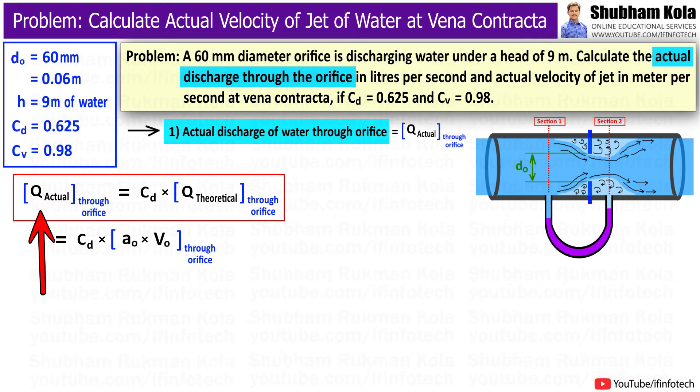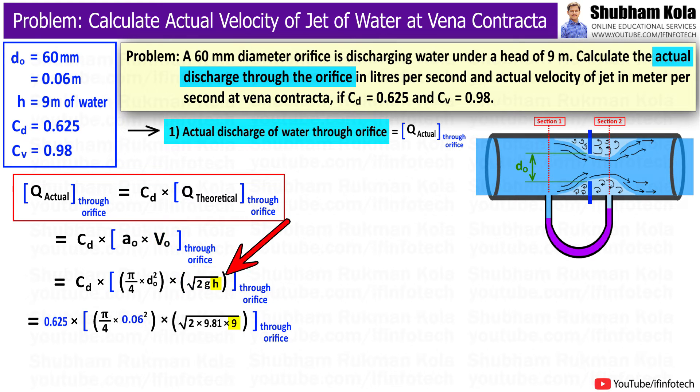Therefore, actual discharge of water through orifice equals CD × A₀ × V₀, where A₀ is the area of orifice, that is (π/4)d₀², and V₀ is the velocity of water through orifice, that is √(2gh), where h = 9 meters and g is acceleration due to gravity, 9.81 m/s².